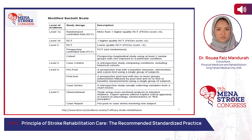It's important to know the level of evidence in research. Level one means randomized clinical trial. Level two is a randomized clinical trial with a cohort as well as a prospective controlled study. Level three is case-control only. Level four is case series, and level five is observational or case report.